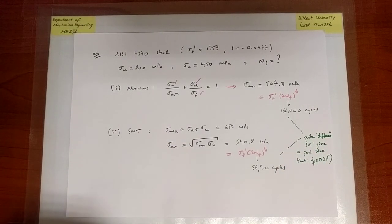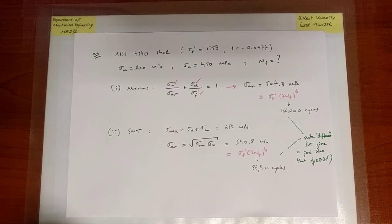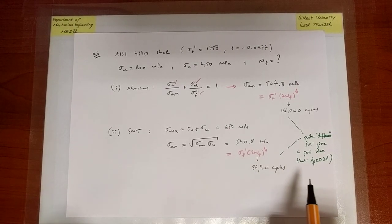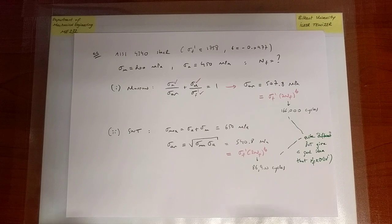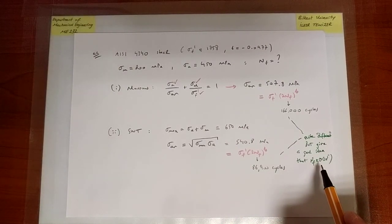So both models predict the same thing. Number of cycles to failure is about 10 to the 5. So if you wanted to learn if you could go up to a million cycles, the answer is certainly no. If you wanted to see if you could apply at least 1,000 cycles, the answer is probably yes, you can. So both of them are able to predict the same order of magnitude.